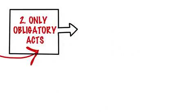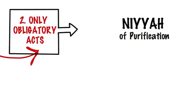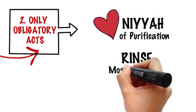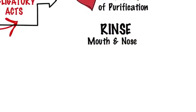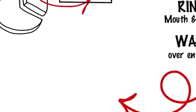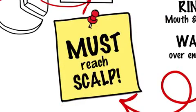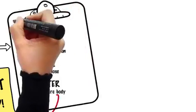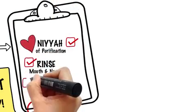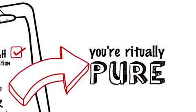So what are these obligatory acts of Ghusl? A beforehand Niyyah — intention that you are taking this bath to purify yourself from the major ritual impurity — rinsing your mouth and nose, and letting water run over your entire body at least once. Make sure it reaches every part of it, even your scalp under the thick hair. If you manage to do this much, then you have purified yourself from the major ritual impurity.